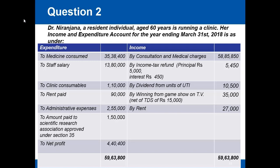She received dividends from units of UTI amounting to rupees 10,500. She also won a game show on TV and received rupees 35,000, which is net of TDS of rupees 15,000. She also received a rent of rupees 27,000 during the year, making her total income rupees 59 lakhs 63 thousand 800.